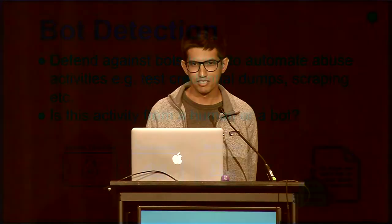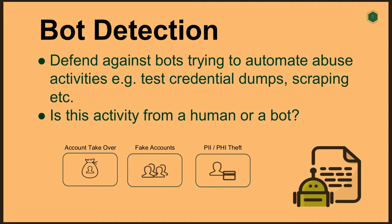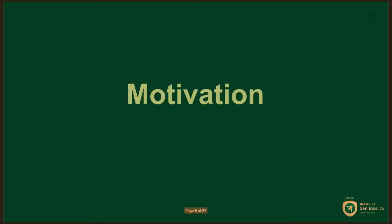Let's talk about the problem statement. Bot detection is a pretty hot topic and a big problem these days. Essentially, you're trying to defend against bots which are automating some sort of abusive activity — for example, automated creation of fake accounts, automatically posting fake content, scraping sites like LinkedIn, or testing out credential dumps to see if users are reusing leaked passwords. The core question is: is this activity from a human or a bot?